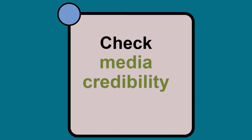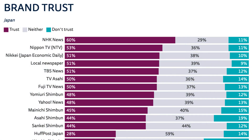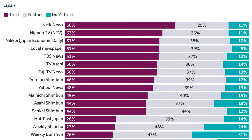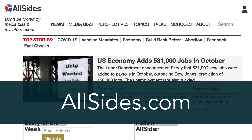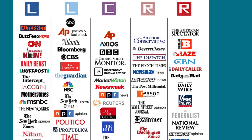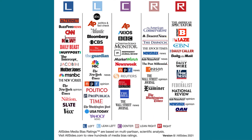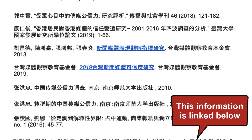There are a wide range of news sources. Before analyzing the news, check the media credibility. The Digital News Report includes a Trust and Brand Trust section, which shows how consumers in a particular country feel about digital news outlets and digital news generally. AllSides.com is a website which rates news organizations in terms of political bias and reliability. The site primarily includes Western news sources. Click the link in the description box for more information about the credibility of East Asian news sources.